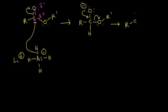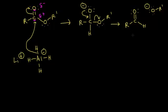Now we have R bonded to carbon with a reformed carbonyl, with only two lone pairs of electrons on that oxygen, and a hydrogen right here. We lost an oxygen with an R prime group, and that oxygen has three lone pairs with a negative one formal charge. Oxygen being relatively electronegative can handle that formal charge and be relatively stable. So now we have an aldehyde, and since there's extra lithium aluminum hydride floating around, another reaction is going to occur.